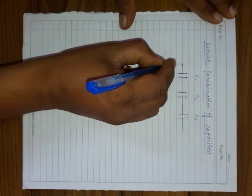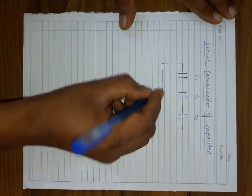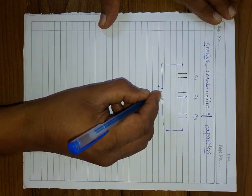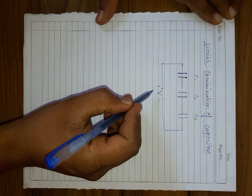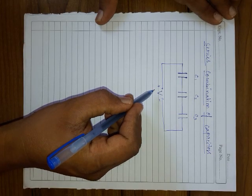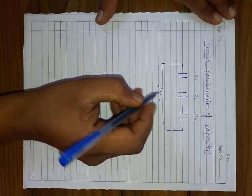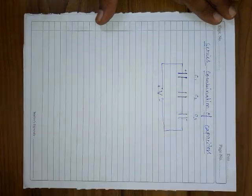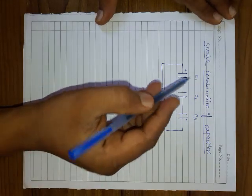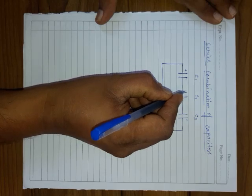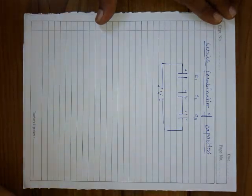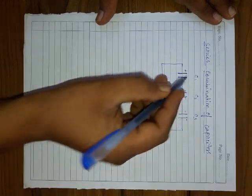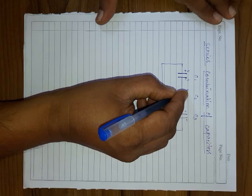We connect a battery across the combination with potential difference V. When connected, this plate becomes positive and this plate becomes negative. In series combination, if the first plate is positive, then negative appears on the next, then positive, then negative — alternating like this. The capacitors are said to be in series if the same charge appears on the plates.